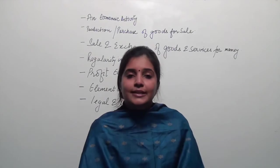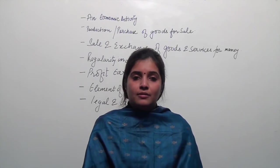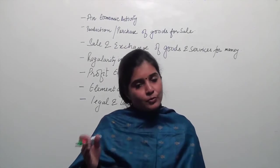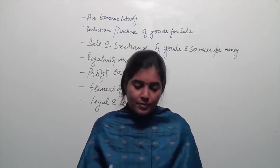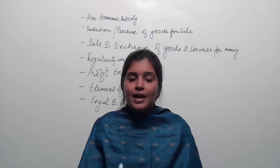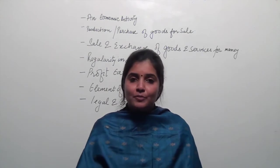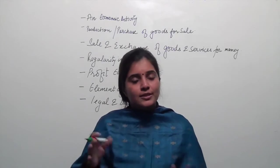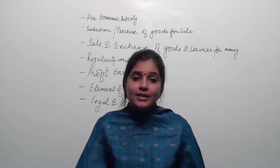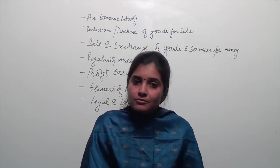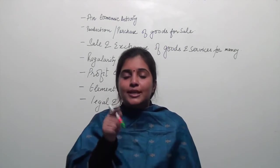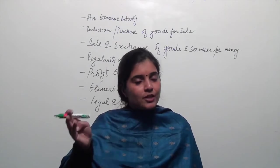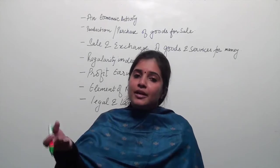Coming to the next characteristic: production. Whatever product you are going to sell, you either manufacture it yourself or import it from somewhere and then sell it. For example, in manufacturing computers, you may have your own assembly line, or you get the monitor from one source, the CPU from another, assemble them and resell. What necessarily has to be there is production or procurement of goods with a purpose to sell further — that is very important.